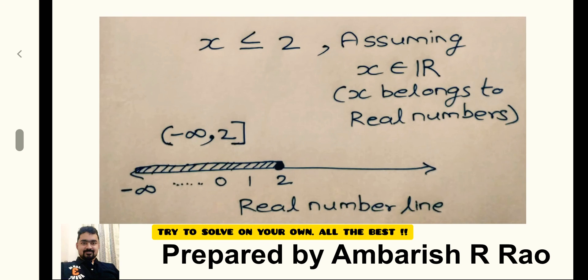All this is assuming that x belongs to real numbers. So they can include decimals or many other things.